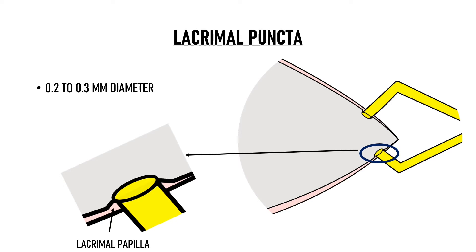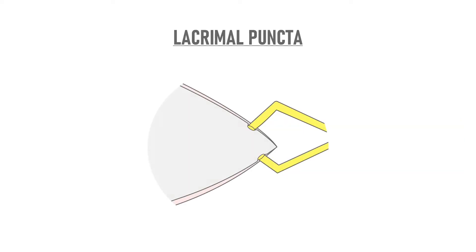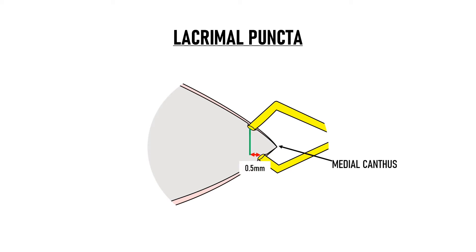The puncta are not exactly opposed to each other. The inferior punctum is approximately 0.5 mm lateral to the superior punctum, and their distance from the medial canthus is 6.5 mm and 6 mm respectively.